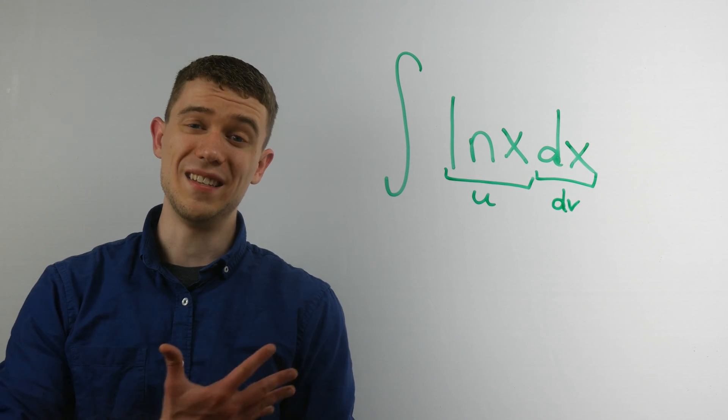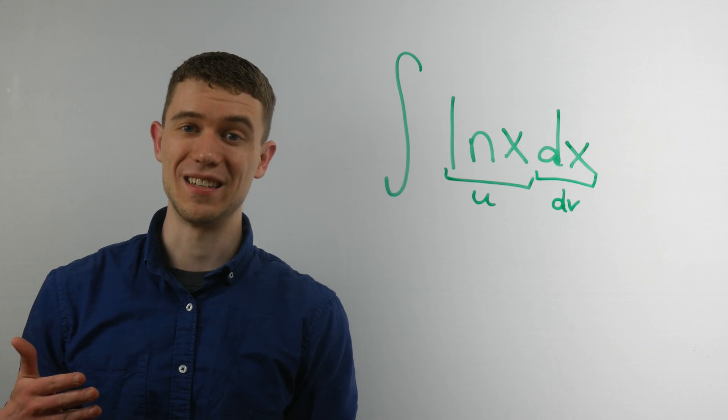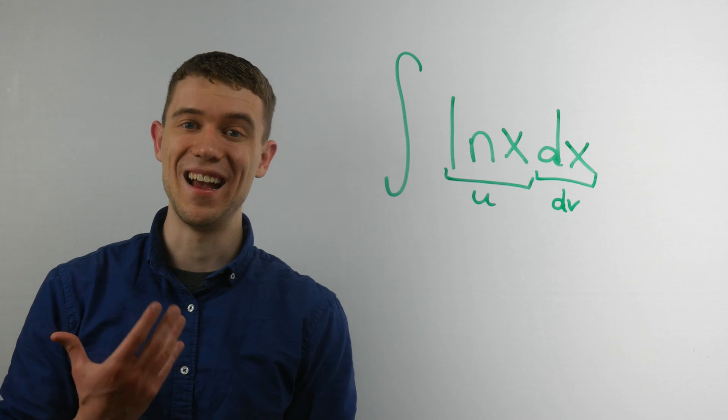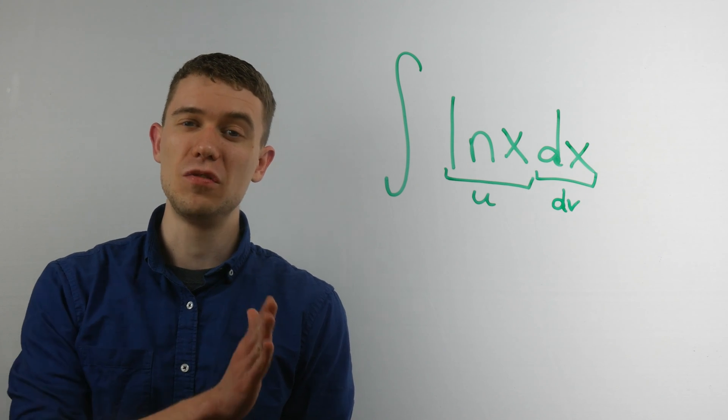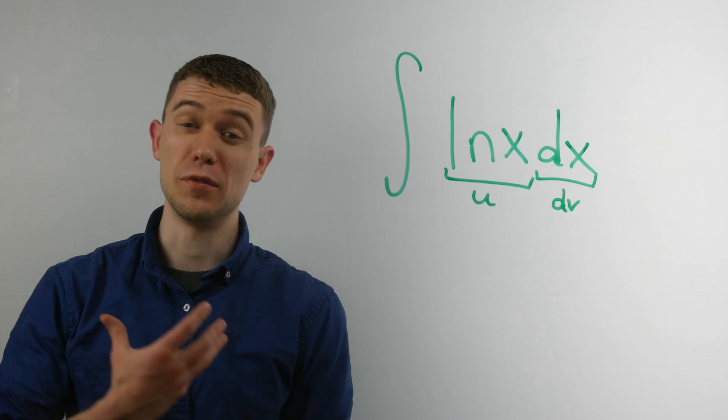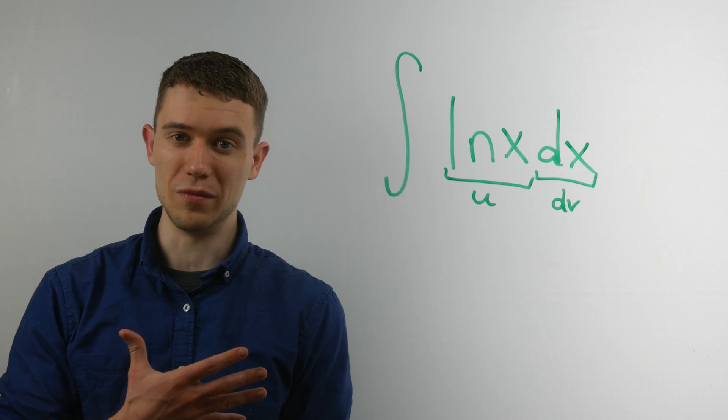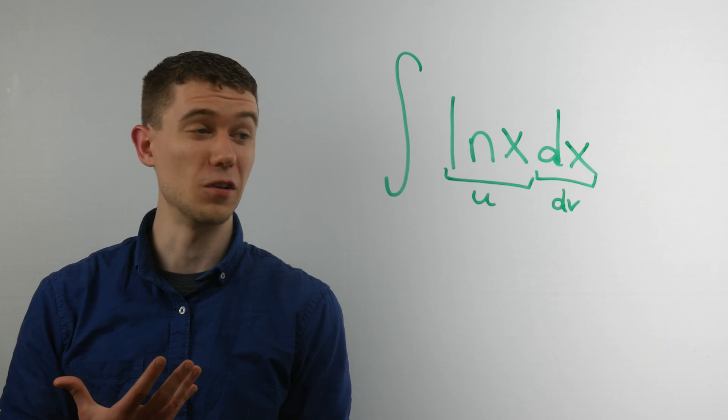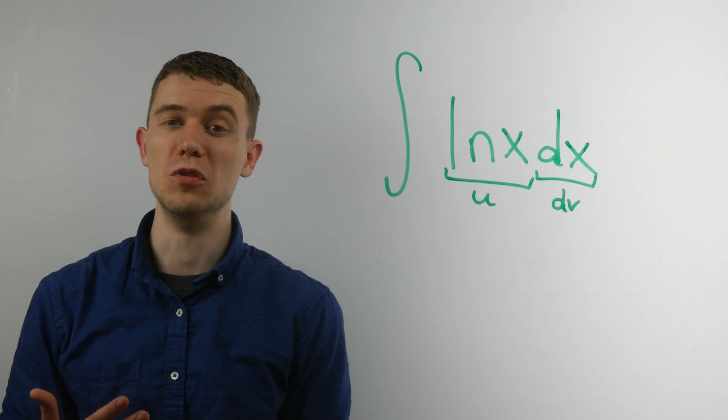Now there is an acronym for selecting u, the order in which you select u. It's called LIAT, L-I-A-T-E. And that tells you the order in which to select things. So the first thing in LIAT is L for logarithm. So if you see a logarithmic function here, like natural log x, that's going to be the first thing I'm going to choose as u.